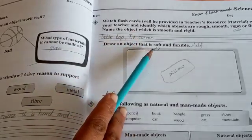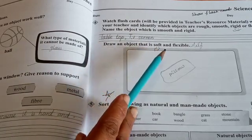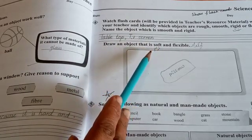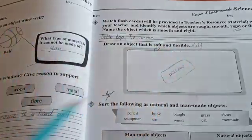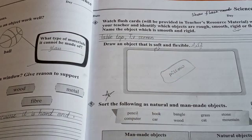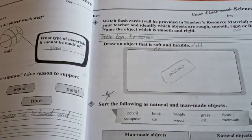Draw an object that is soft and flexible. Here you draw a pillow, which is soft and flexible.